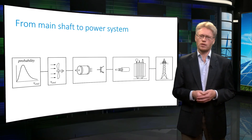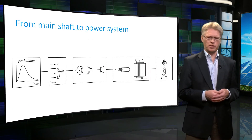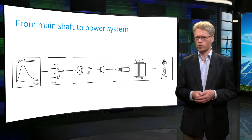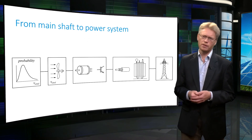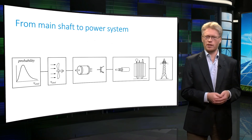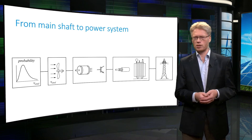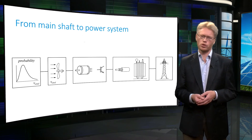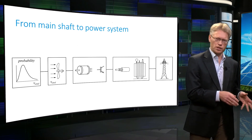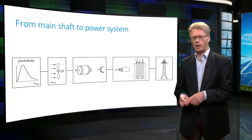We will now have a look at the collection and transmission system. For a single onshore wind turbine, this is normally done by connecting it to the power system using a transformer to increase the voltage level of the generator system to that of the power system.